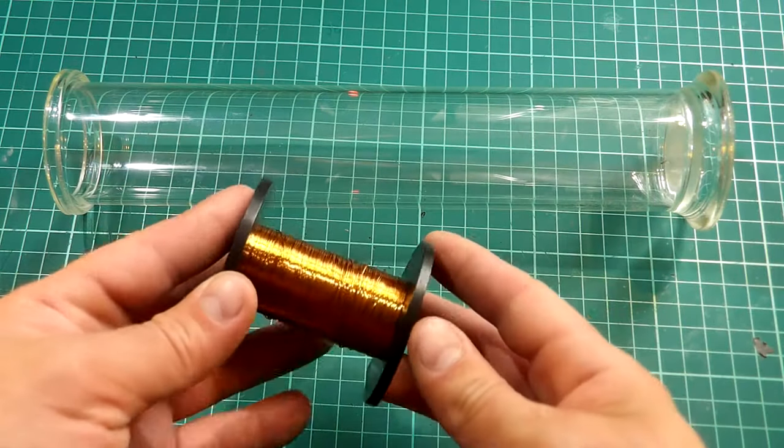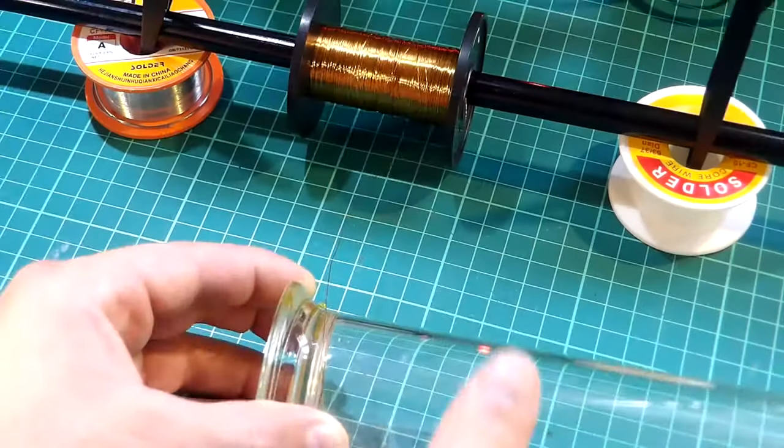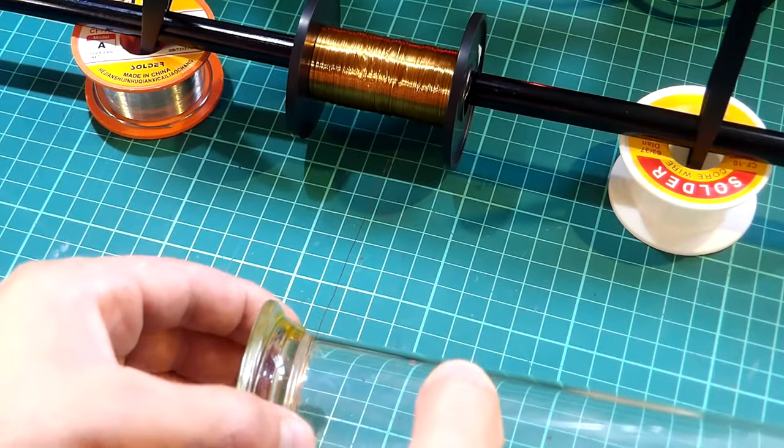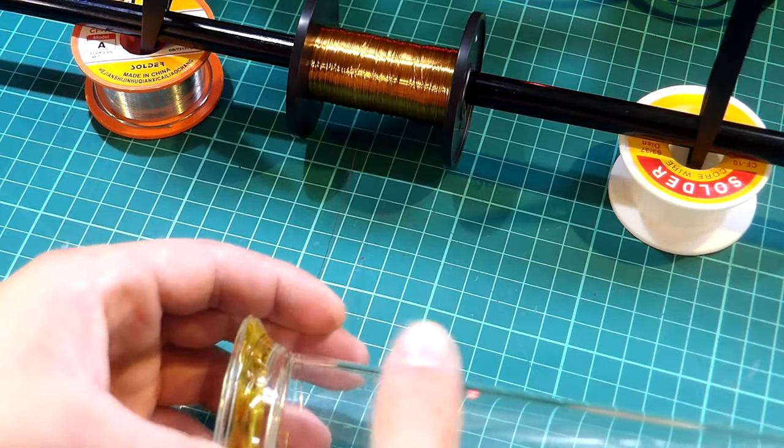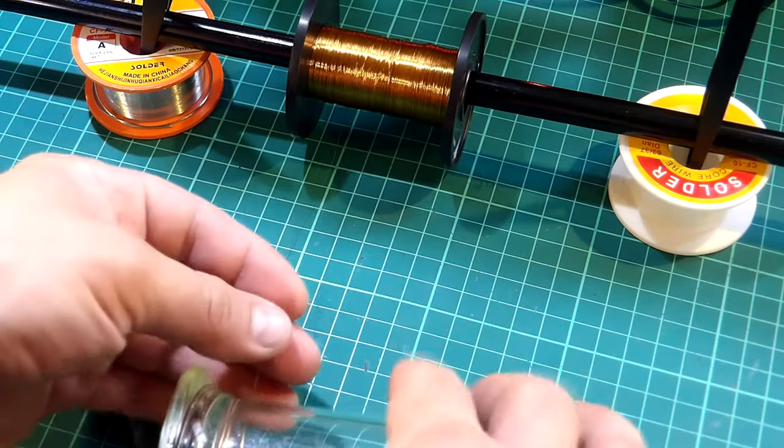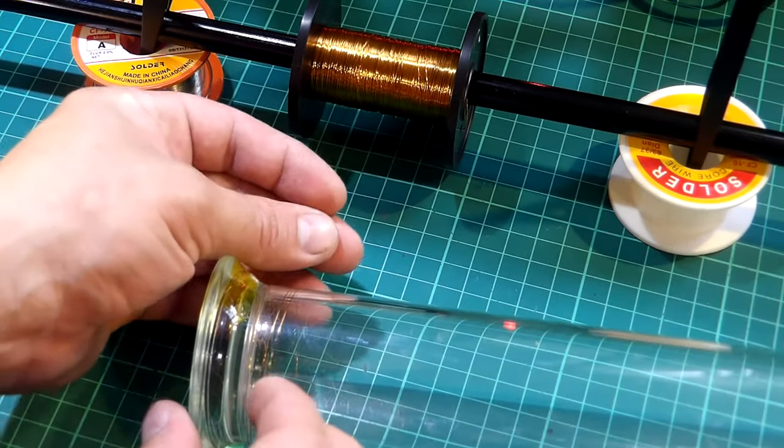For winding the secondary coil I will be using some 0.2mm enameled wire or so called magnet wire. And for making the job easier I will be securing the spool of the wire using 2 small spools of solder wire and some small tweezers and a metal tube. Now like that it will be much better because now I can wind the secondary wire around the tesla coil much faster.